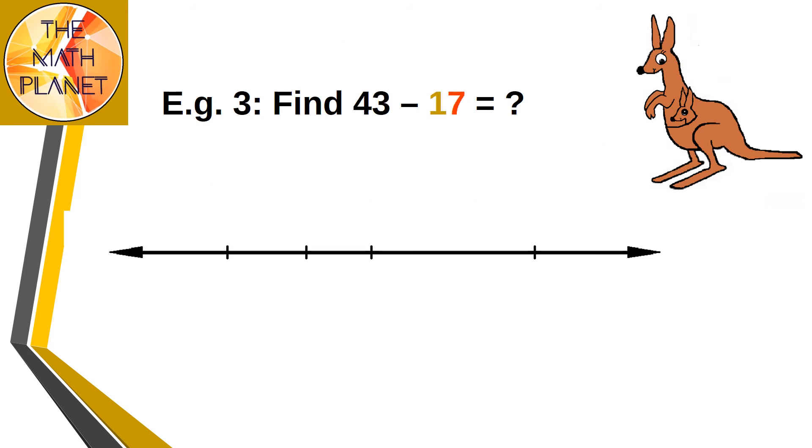Can you help me to solve this last example to find 43 minus 17? Our start point will be at 43. Then we will count backwards to subtract 17. So here's 43 at the end of the open number line.